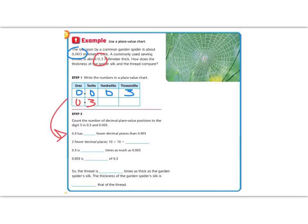We're going to count the number of decimal places that the three is different. We have a three here, and we have a three here. It has 0.3 has blank fewer decimal spaces. So, it has one, two. It has two fewer decimal spaces.